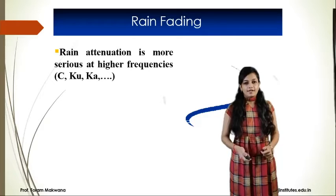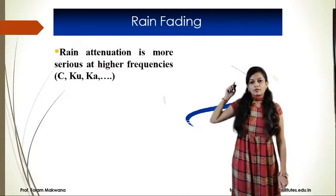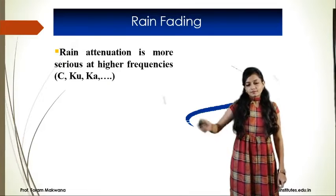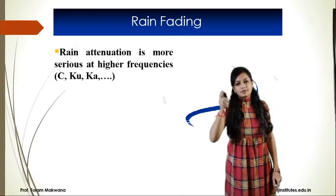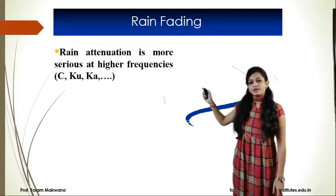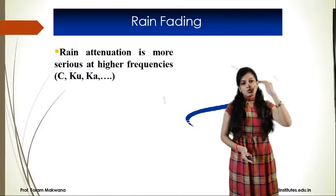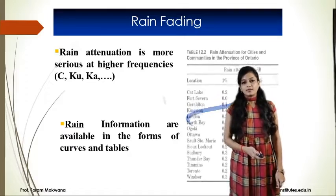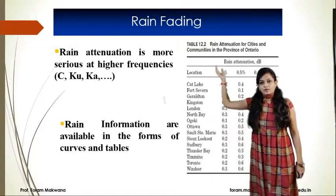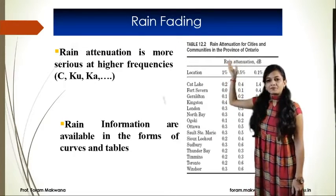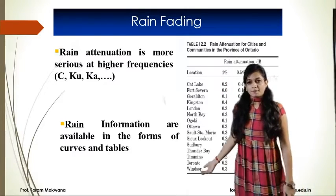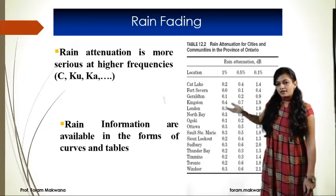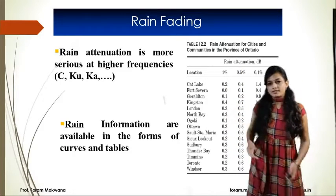What is rain fading? Because of the water vapor content at 22.2 GHz, we get a peak. Apart from that, because of rain, attenuation is always present — especially at higher frequencies like C, Ku, and Ka bands. Rain information is available in the form of charts and tables showing rain attenuation for cities and communities at different locations, for rain occurrence of 1%, 0.5%, and 0.1% of time. All quantities are in dB.